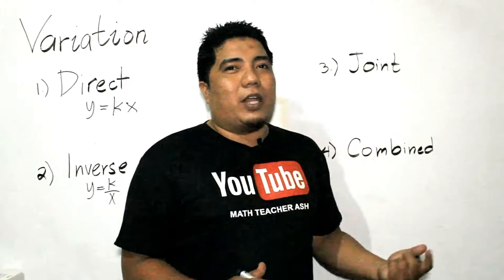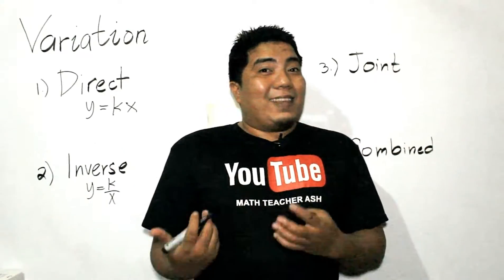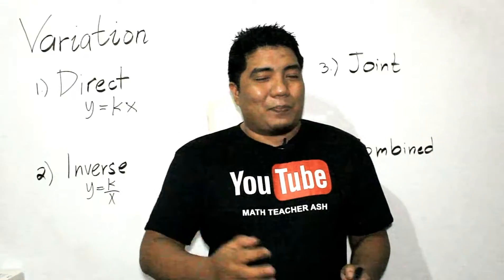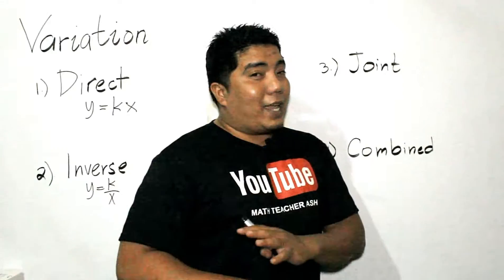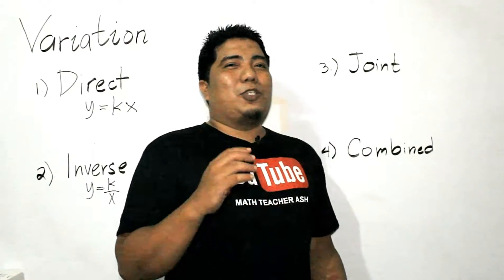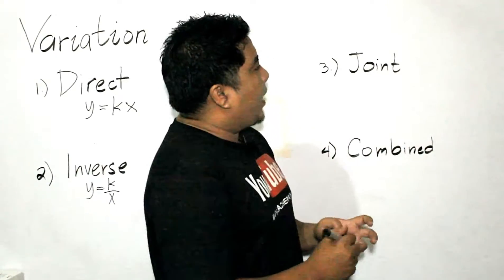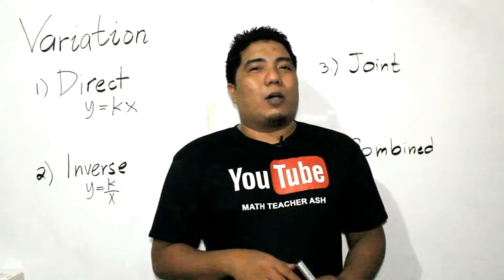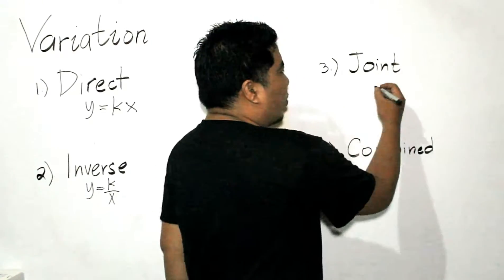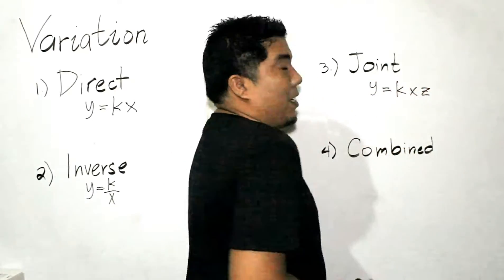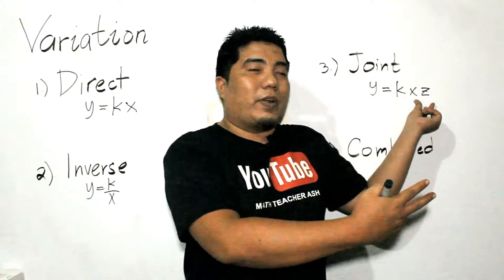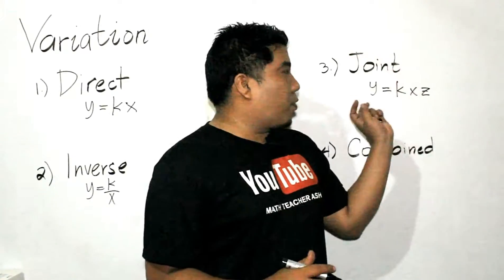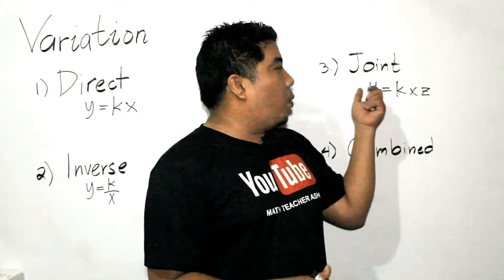For joint and combined variation, we deal with at least three or more variables — let's use x, y, and z. Joint variation is basically like direct variation except with three or more variables, written as y is equal to kxz. When x and z increase, y also increases; when x and z decrease, y also decreases.